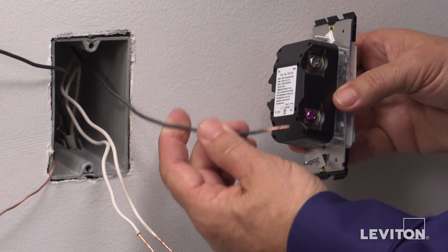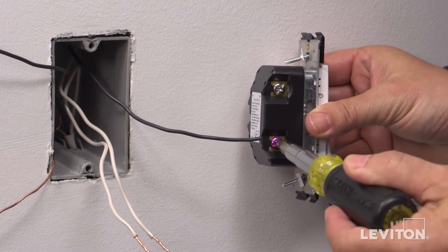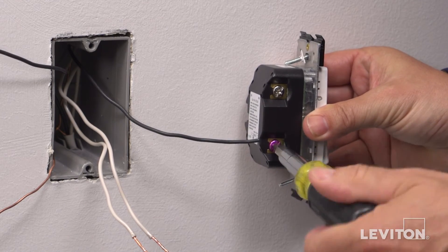To wire, first take the load wire and insert it into the hole labeled RD. Tighten the screw to secure.